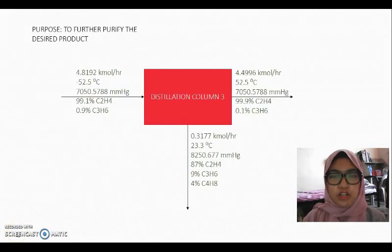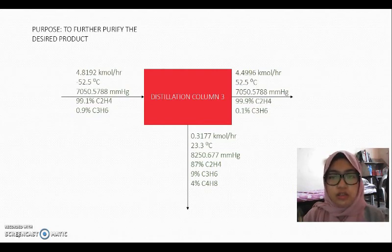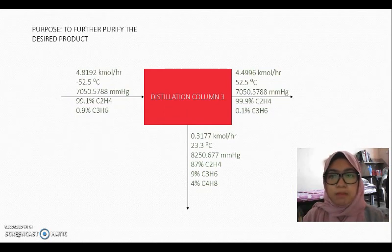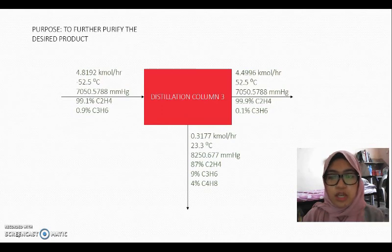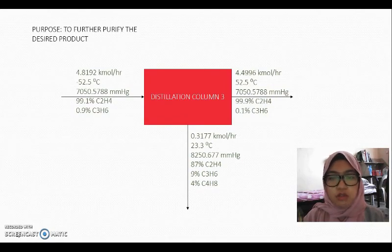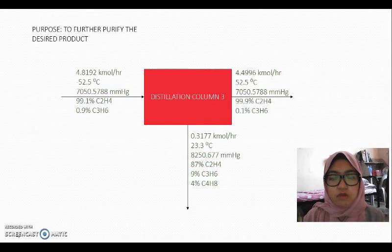The last unit is distillation column 3 with the purpose to further purify the desired product. The feed coming in from distillation column 2 is 4.8192 kmol per hour, negative 52.5 degrees Celsius and 7050.5788 mmHg. The composition is 99.1% ethylene and 0.9% propylene. It will go through distillation column 3 and produce 99.9% ethylene and 0.1% propylene with the same temperature and pressure. The flow rate at the product is 4.4996 kmol per hour. The by-product is 0.3177 kmol per hour, 23.3 degrees Celsius, 8250.677 mmHg, with the composition of 87% ethylene, 9% propylene and 4% butylene.